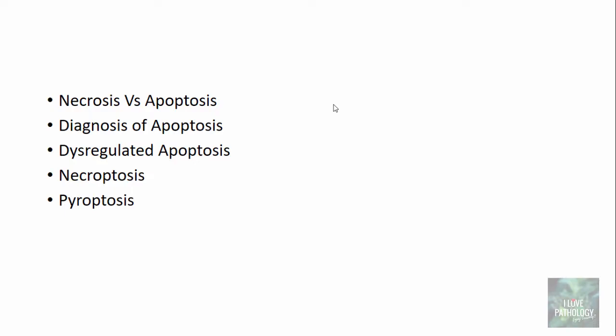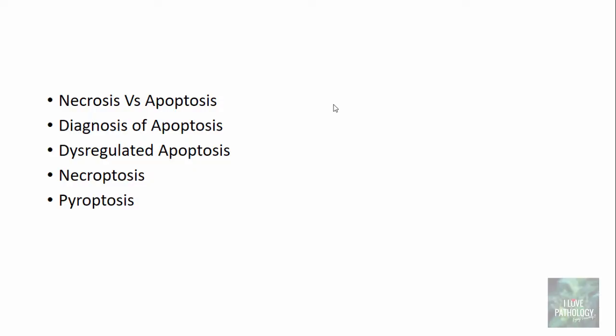In this part, we will discuss mainly about the differences between apoptosis and necrosis, and we will see how we can diagnose apoptosis. We will also understand the various disorders associated with dysregulated apoptosis, and then we will end with understanding the concepts of necroptosis and pyroptosis.